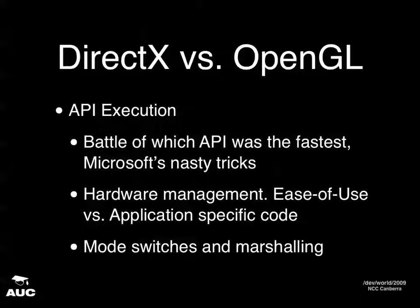With DirectX, there is a lot more hardware management. The objects you use in DirectX require you to set up memory allocations. Whereas with OpenGL, you don't have to get into that much hardware depth, making it a lot easier to use. However, if you develop DirectX using hardware allocations, you get more application-specific code, which generally makes your code more efficient because you're designing the hardware allocations for that specific application.